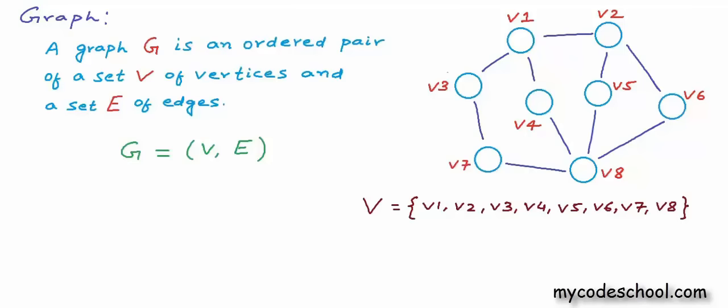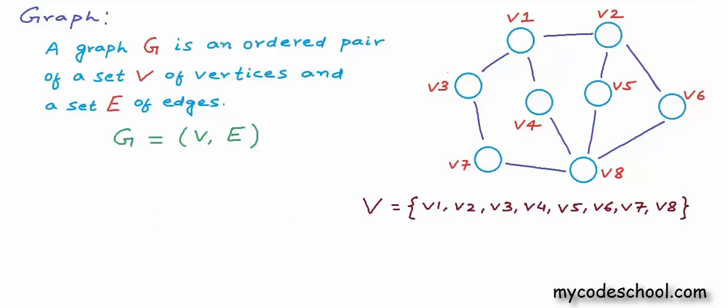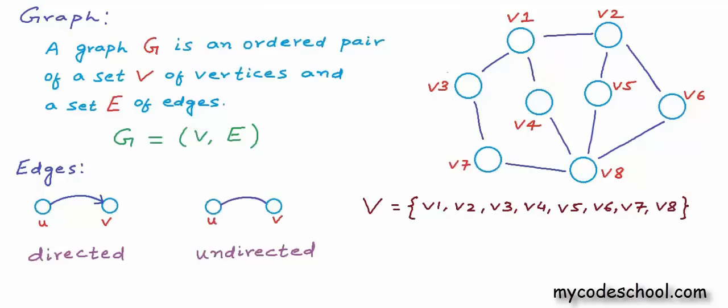Now, what's my set of edges? To answer this, we first need to know how to represent an edge. An edge is uniquely identified by its two end points, so we can write the names of the two end points of an edge as a pair as a representation for the edge. But edges can be of two types — we can have a directed edge in which connection is one way, or we can have an undirected edge in which connection is two way. In this example graph, edges are undirected.